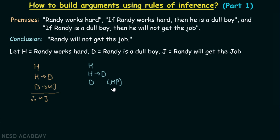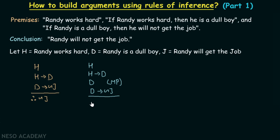The next step is to take another two premises. We can take D and D implies not J. Note that it is not necessary to always take premises from the original set only — the conclusion of one argument can serve as a premise for the next. Here, D is the conclusion of the first argument and becomes a premise for this one. Applying modus ponens again gives us not J.